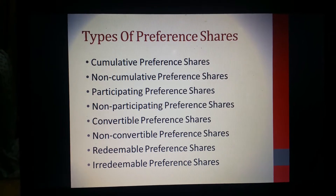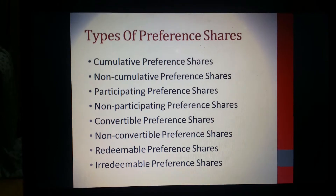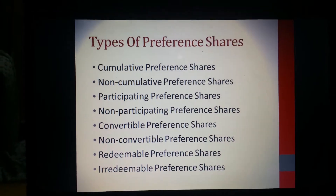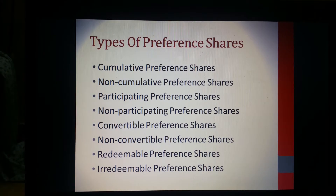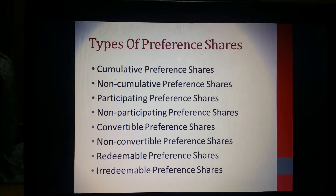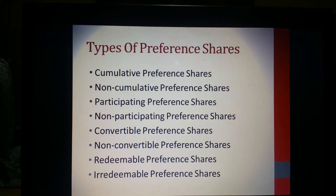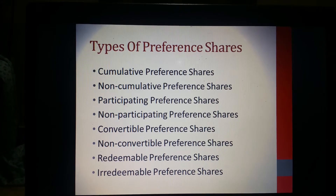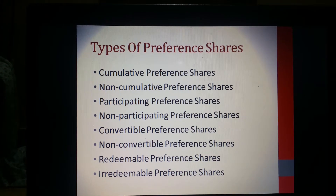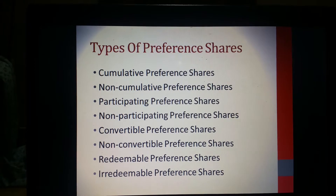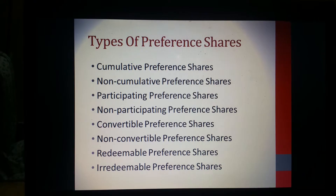The first type of preference share is cumulative preference shares. Cumulative preference shares are those shares where if in any year the company does not make profit, the arrears of dividend for that year will be carried forward and paid in the succeeding years. For example, if in the year 2020 the company has not made sufficient profits to declare dividends, then the dividends for 2020 will be paid out from 2021 onwards — the company will arrange for the payment of those arrears in the succeeding years.